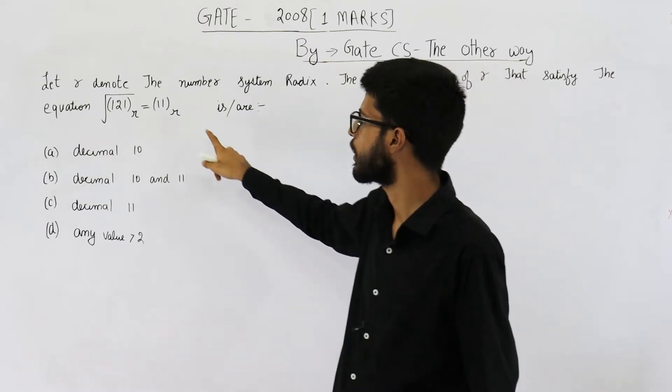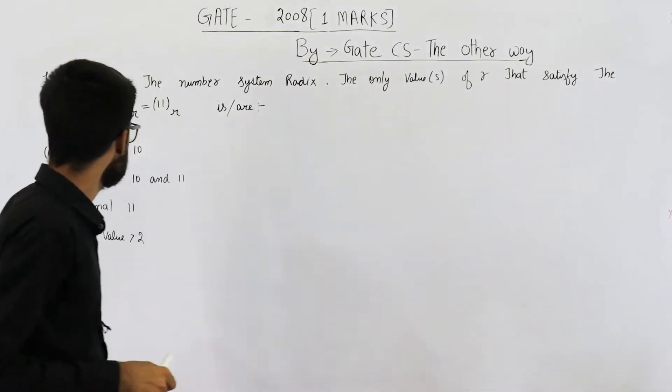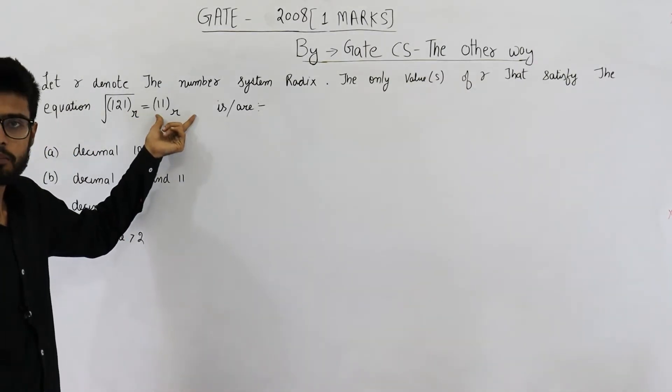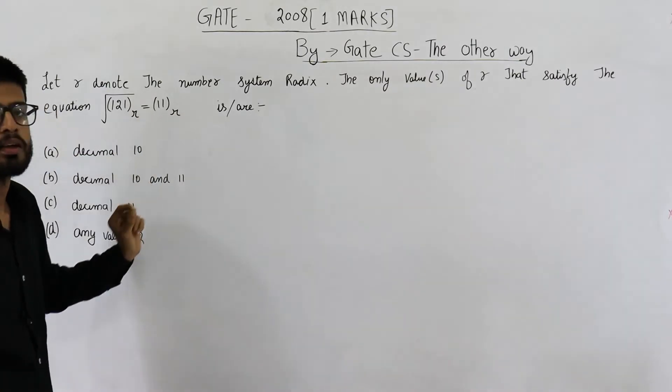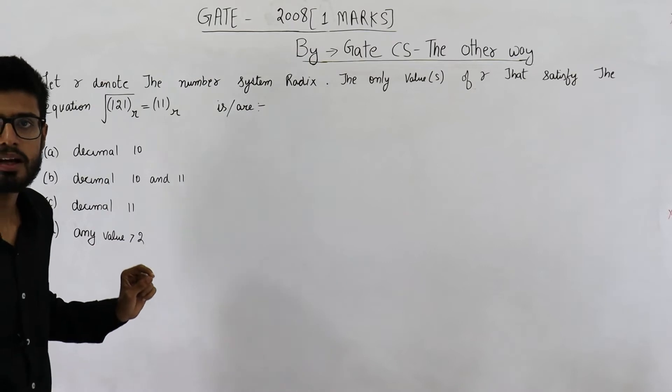You can see if we convert both of these numbers into base 10, we'll get some equation that will have only one variable, that is r. So we'll solve that equation for r.